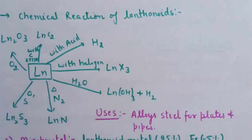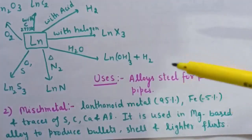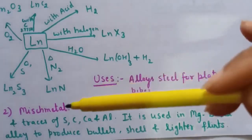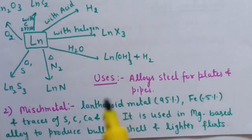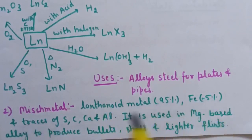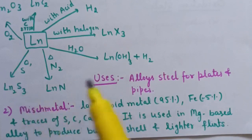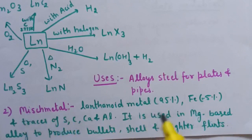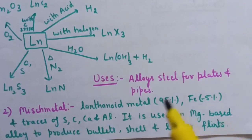Uses of lanthanoids: first, lanthanoids are used for the production of alloy steel for plates and pipes. There is one important alloy of lanthanoids called Misch metal, which contains 95% lanthanoid metal, 5% iron, and some traces of sulfur, calcium, carbon, and aluminum. This Misch metal is used in magnesium-based alloys to produce bullets, shells, and lighter flints.